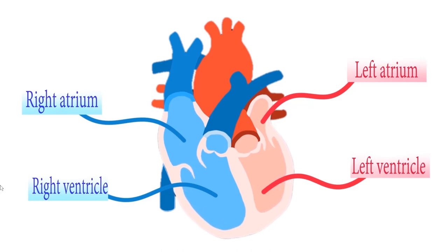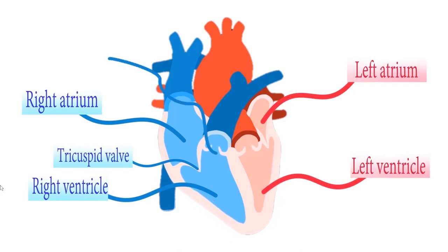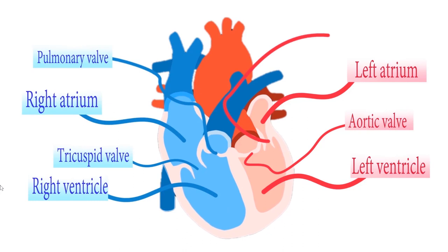So, the heart also has valves, namely the tricuspid valve, the pulmonary valve, the aortic valve, and the mitral valve. These valves are responsible for preventing the backflow of blood while the ventricles of the heart are pumping.